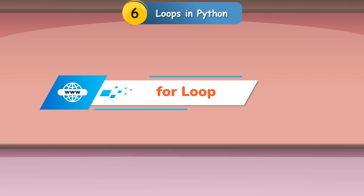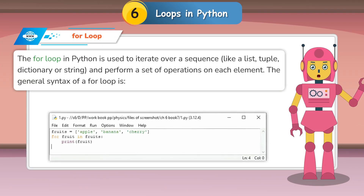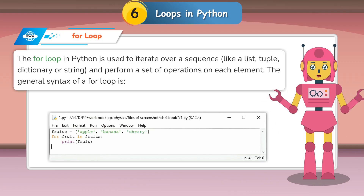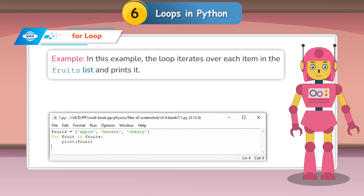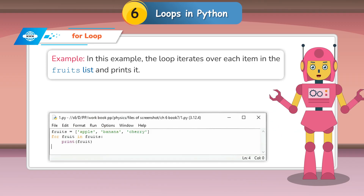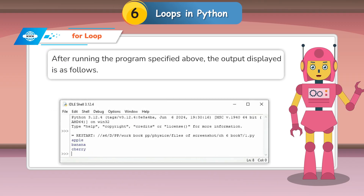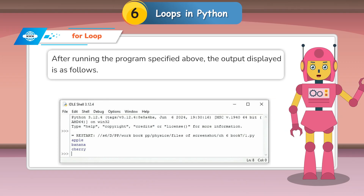The for loop in Python is used to iterate over a sequence like a list, tuple, dictionary, or string and perform a set of operations on each element. In this example, the loop iterates over each item in the fruits list and prints it. After running the program, the output is displayed as follows.